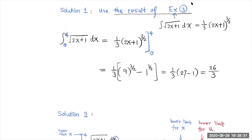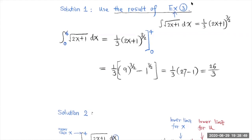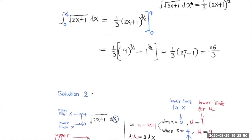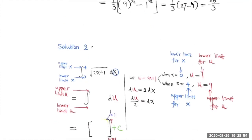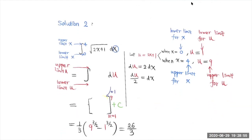So it looks very simple, right? However, you have used maybe 3 or 4 steps to get the antiderivative result, plus another step to evaluate. So it's actually a little bit long. Another way to do this problem is actually more preferable.